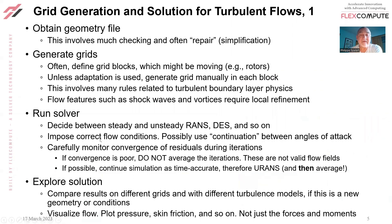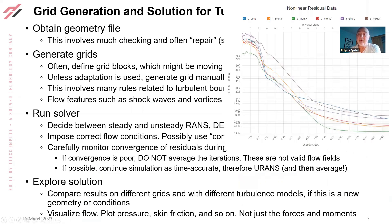You will have to get the correct flow conditions — angle of attack and all these things. In some cases you use continuation: use a solution at, say, 16 degrees angle of attack to go to 18 degrees, and you'll get better convergence than starting from free-stream conditions. I want you to carefully monitor the convergence of the residuals during the iterations. There is an example of a residual plot — pseudo steps, think of them as iterations. You have a residual for every one of the five components of the Q vector and for the turbulence model variable, nu-hat.